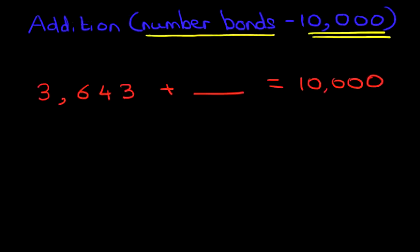Okay, so we have 3,643 plus something equals 10,000. So what number added to 3,643 is going to give us 10,000? Let's have a look at the number 10,000. Now what do we notice here? The last four digits are all zero. That means the four digits here, we have to get them all to zero. We need a one here, but we'll come on to that in a moment.